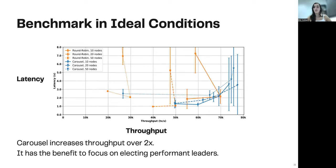Finally, we also check both leader election mechanisms in ideal conditions, meaning that we don't have any faults. And still, we witness that even in that case, carousel increases throughput over two times. This is due to the fact that carousel has the benefit to focus on electing performance leaders. Leaders on more remote locations that are typically slower and respond slowly are elected less often.